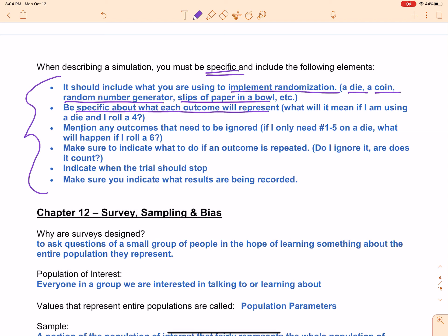You need to mention anything that is to be ignored. So if I'm rolling a die and I only have five possible outcomes, I need to know that if I roll a six, it doesn't represent anything. I act like it never happened and keep rolling the die. Make sure you indicate what to do if an outcome is repeated. Can I roll a number one two times in a row? Does it matter? That will make more sense when I explain it in a specific problem. It depends on the type of problem.